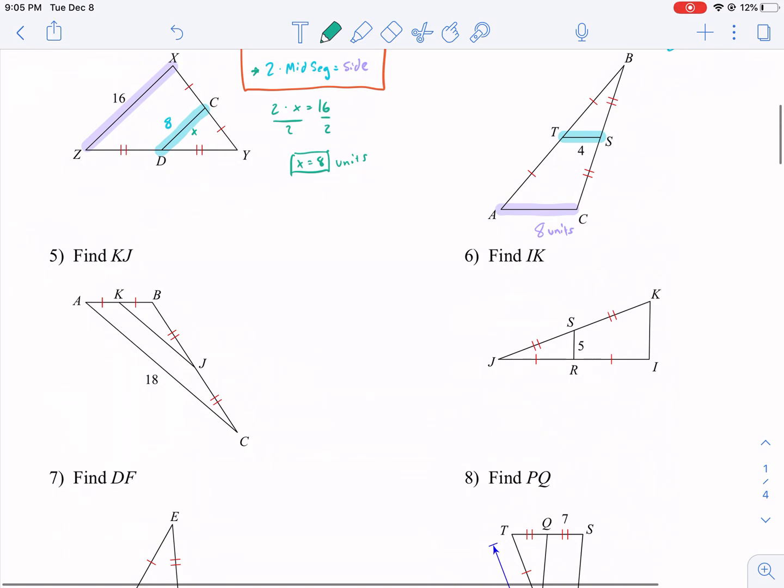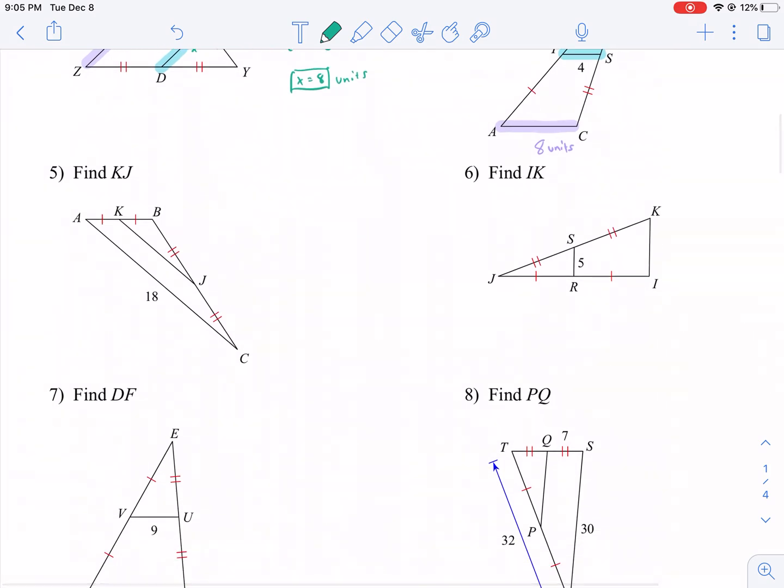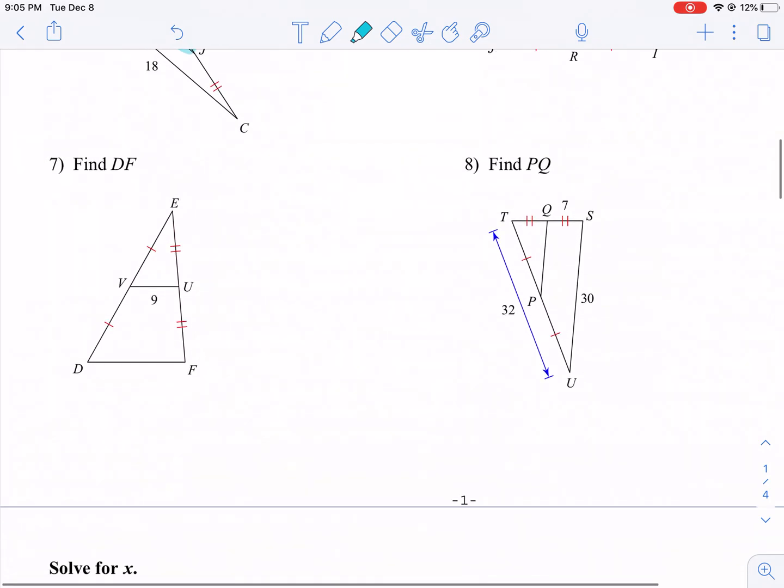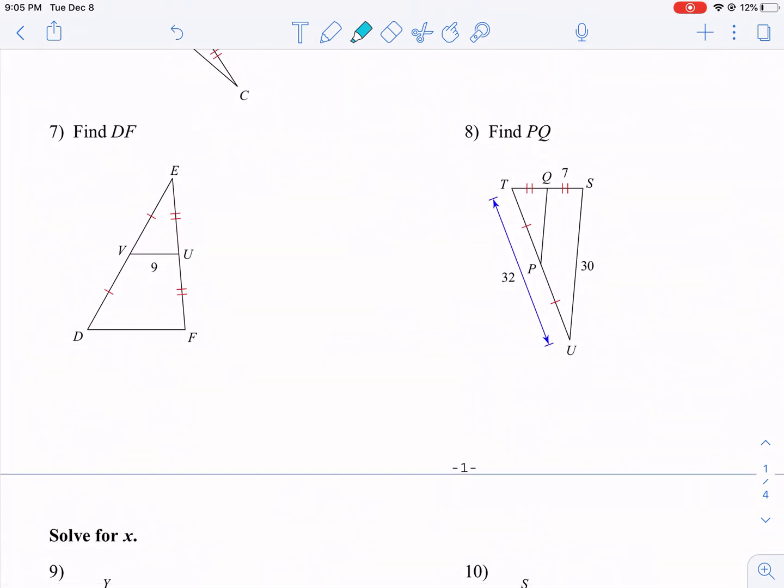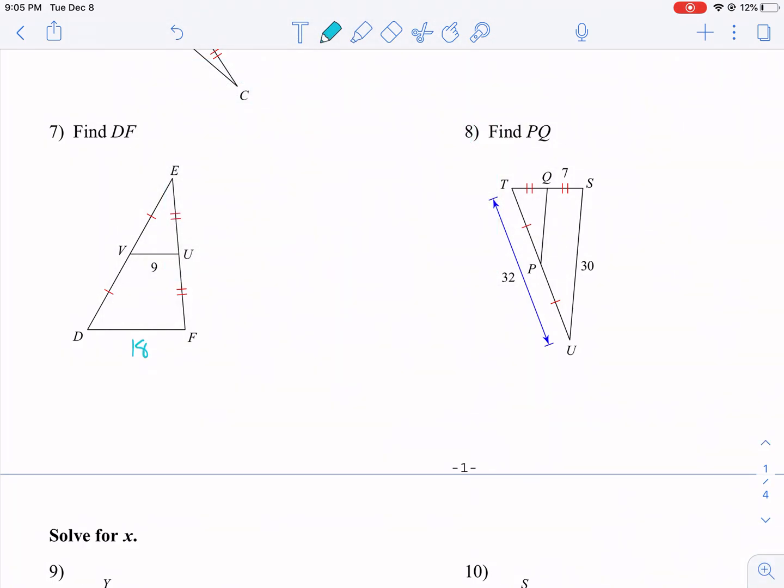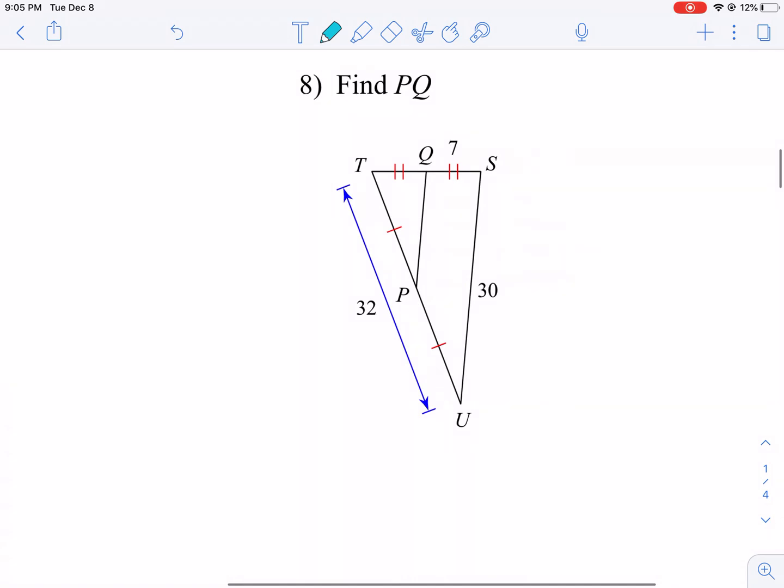I'm going to do these next ones quick, so I can get to the algebra portion. So we're trying to find KJ, it's going to be half that nine. We're trying to find IK, it's going to be double that, it's going to be 10. Because these are mid-segments here, they're half the longer side. Now we're on to DF. DF is going to be double that, so it's going to be 18.